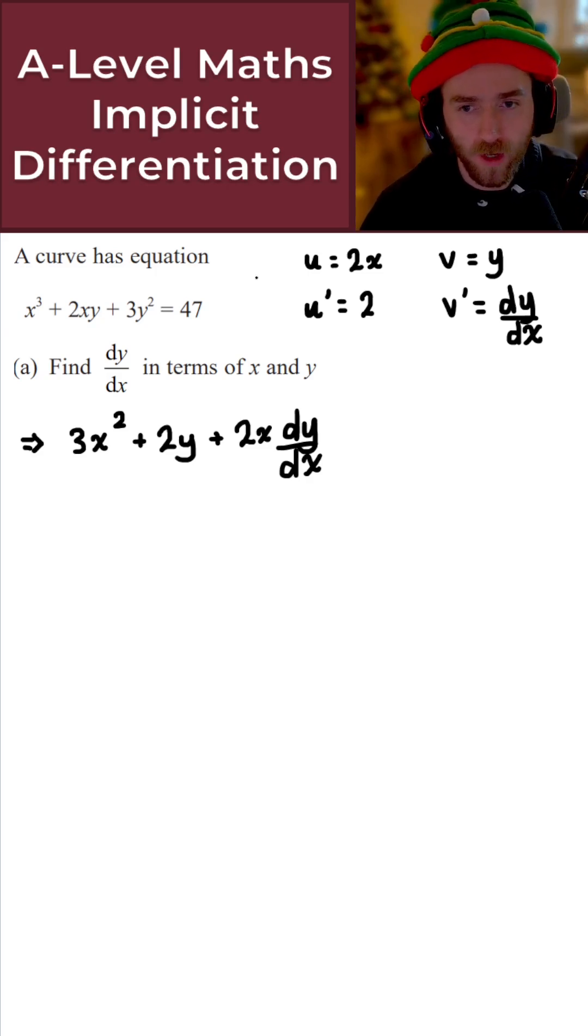Now for the final term on the left-hand side, that's 3y². So differentiating that, we get 6y, but don't forget we need to times that by dy by dx. We get 6y dy by dx.